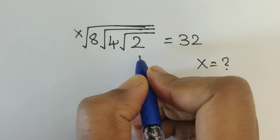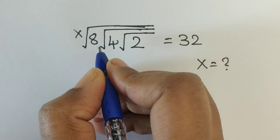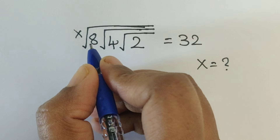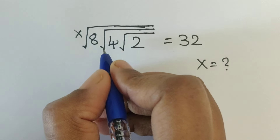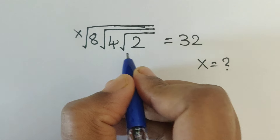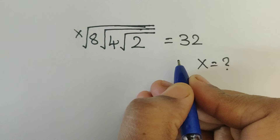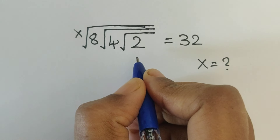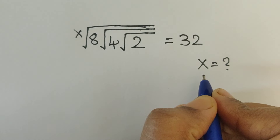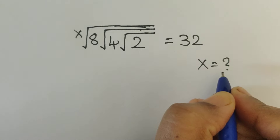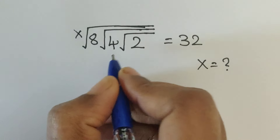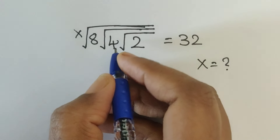Hello everyone, welcome back to our channel. Here we have one problem: x to the root of 8 square root of 4 square root of 2 equals 32. In this problem we have to find the value of x. Let's see how we solve this.